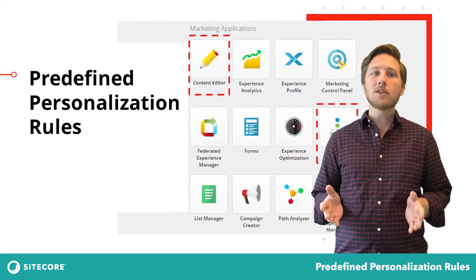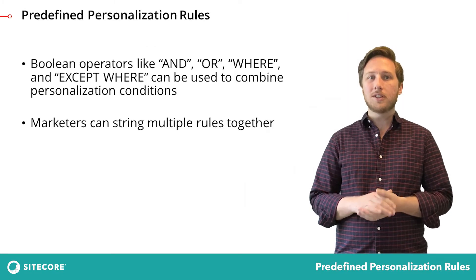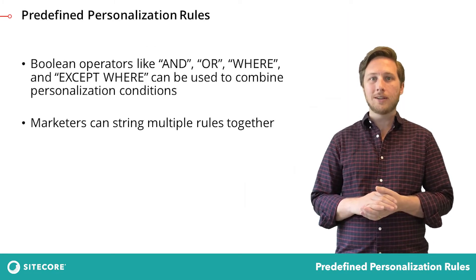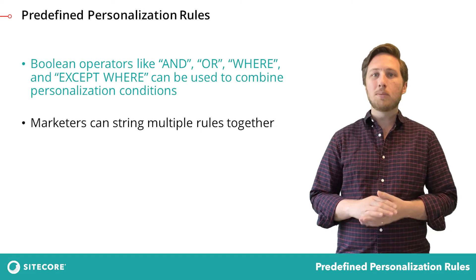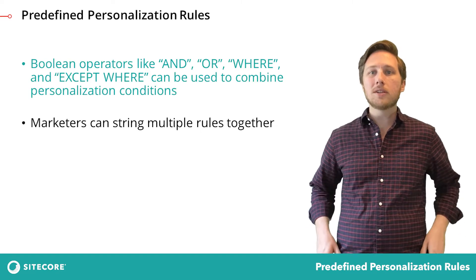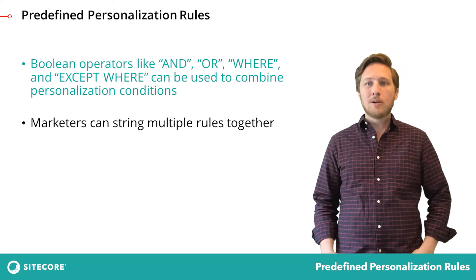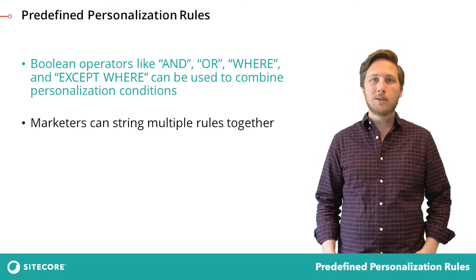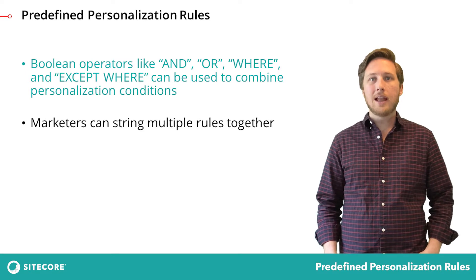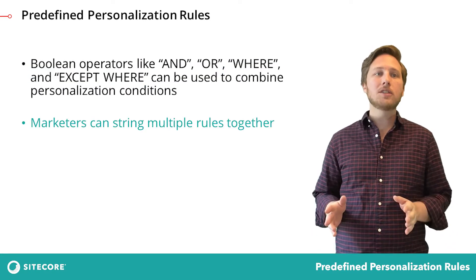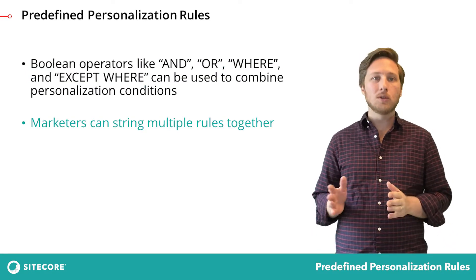Marketers define personalization conditions by selecting rules in the rule set editor. With Boolean operators like AND, OR, WHERE, and EXCEPT WHERE, marketers can string multiple rules together.